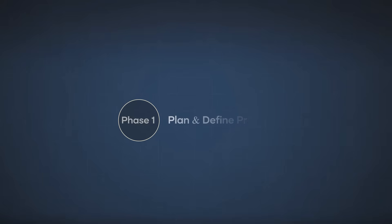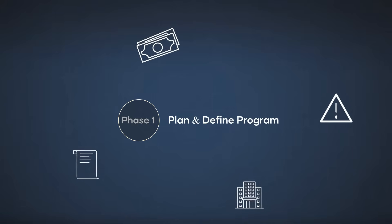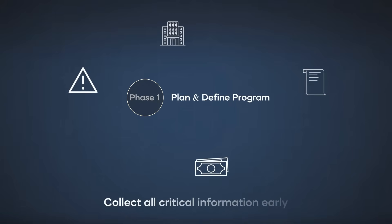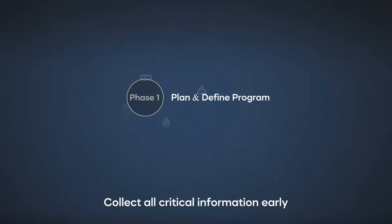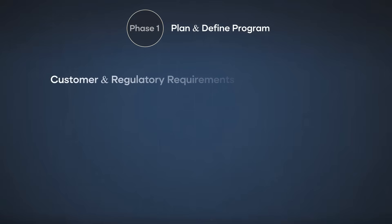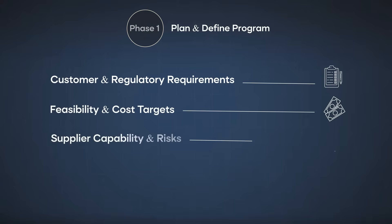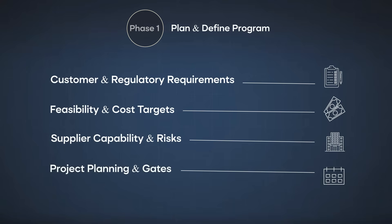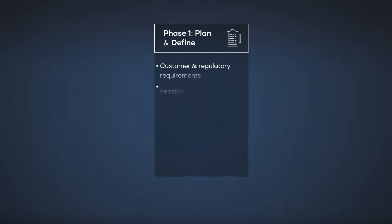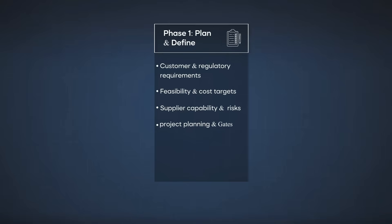Let's start with phase one: plan and define. This is where everything begins — the foundation of your project. In phase one, our main focus is on understanding requirements and setting the stage for success. We gather all critical information: customer requirements like mechanical loads and environmental conditions, feasibility and cost targets, supplier capability and early risk assessments, and high-level project planning including the timeline, budget and key milestones or gate criteria. Think of phase one as building the roadmap before the journey starts. If this phase is weak, everything that follows becomes reactive rather than proactive.